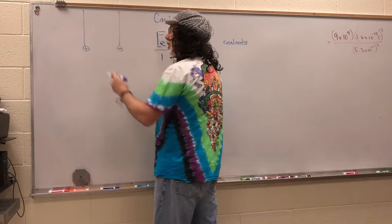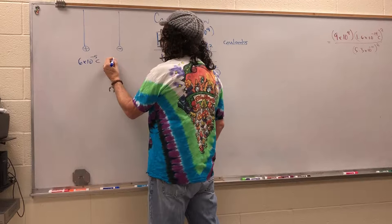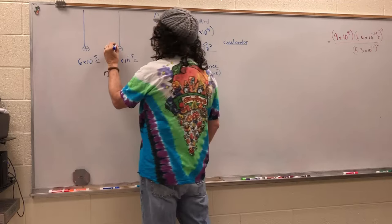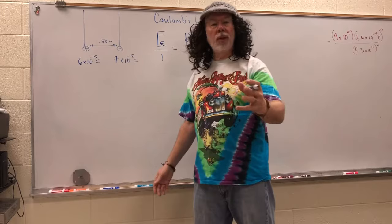Now let's take a look at this picture. This is a positively charged particle and this is a negatively charged particle hanging by threads. Let's give this one a value of 6 times 10 to the -5 coulombs, and let's make this one 7 times 10 to the -5 coulombs. The distance between them is going to be 0.50 meters. That's the information that's normally given in the question.